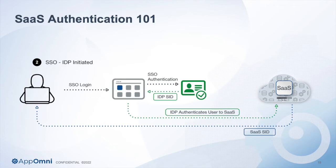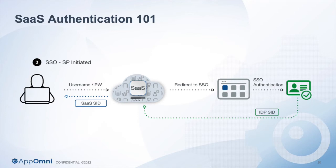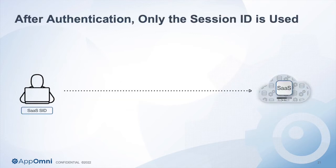If you're using an identity provider — Ping Identity, ADFS, or Okta — you've got something in place doing strong authentication. You could have multi-factor authentication or zero trust authentication through your IDP. Once the user connects to that IDP, it passes a SAML assertion and logs the user into the SaaS application, resulting in a session ID back to the user's browser. The third type is service provider-initiated flow, where you configure your SaaS platform to refuse local authentication and redirect users to the IDP first. This is a best practice. But the end result is always a session ID, no matter how many hoops you jump through for initial authentication.